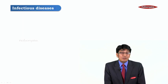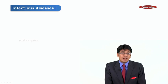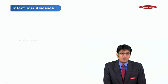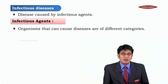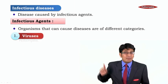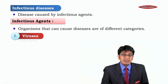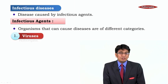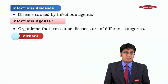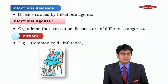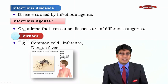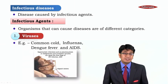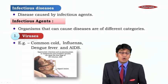Infectious diseases are caused by a germ, a pathogen, or a microorganism — bacteria, virus, worm, or anything similar. Let's see some common examples. Organisms that can cause disease fall into different categories. Number one: viruses. They are very dangerous and deadly, and can cause very harmful diseases like the common cold, influenza, and dengue fever.